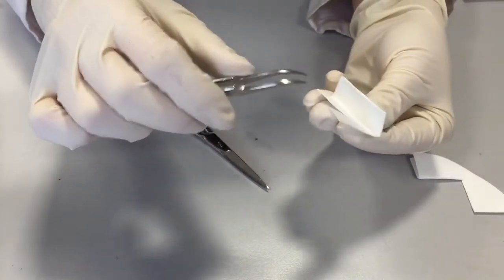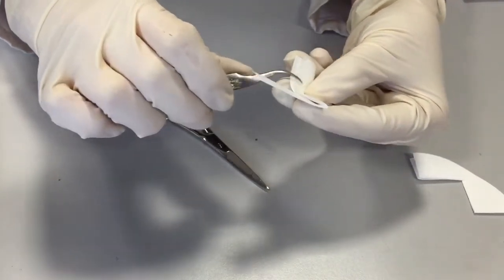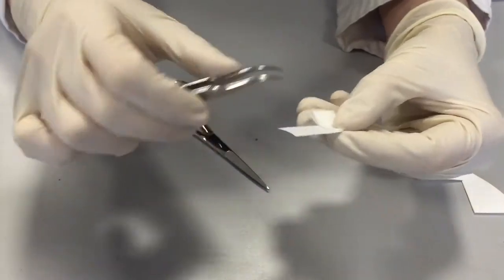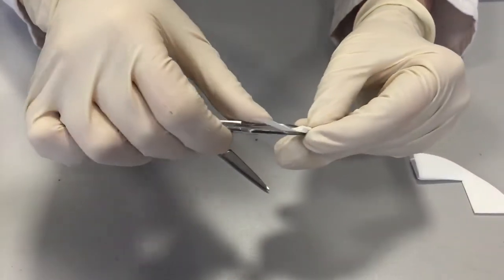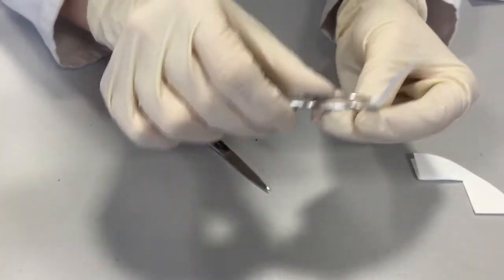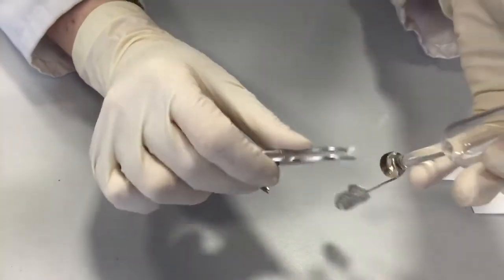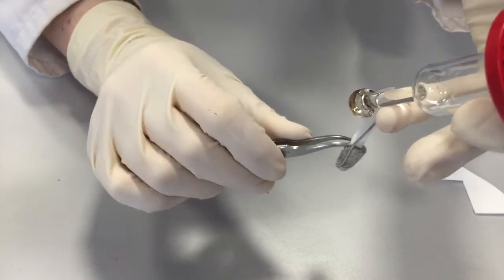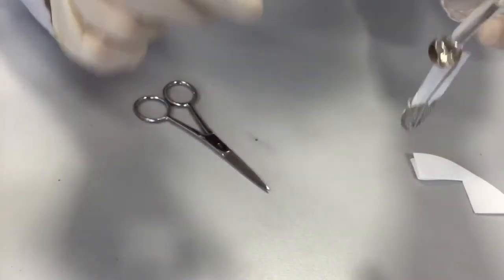Once you're satisfied your sample is in the centre, you fold it in this way: fold it in half, half again, and if possible half again, and then slot it into the basket like that.